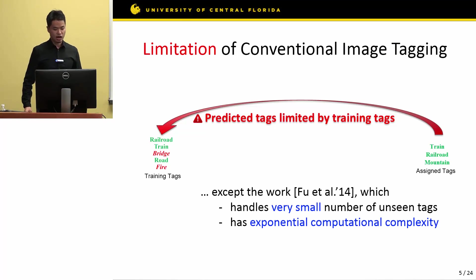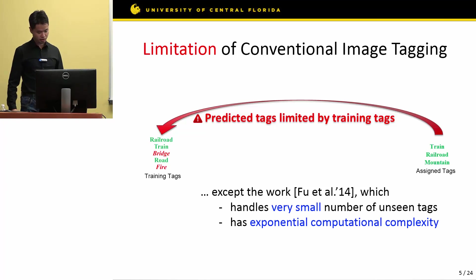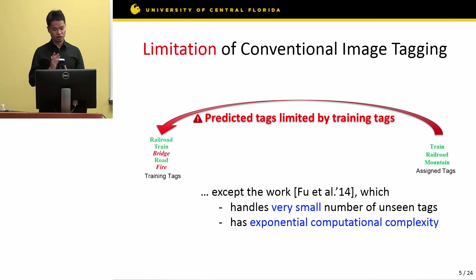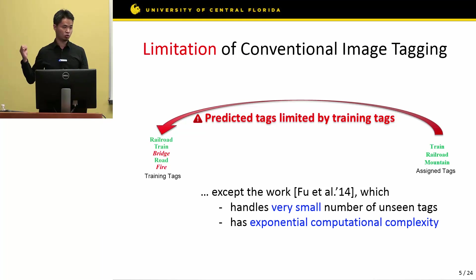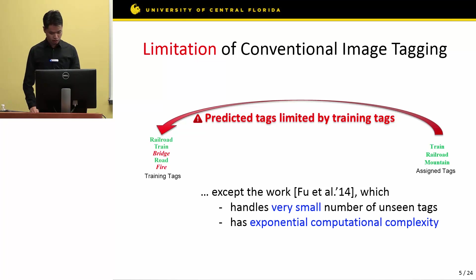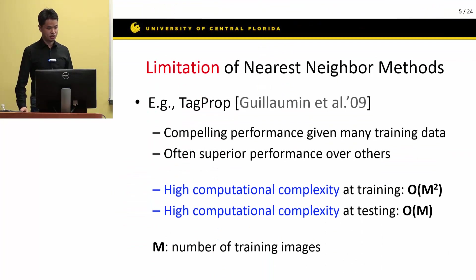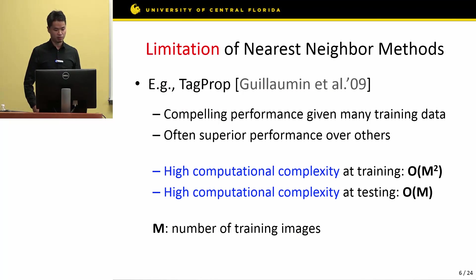This problem has been addressed by Foo et al. in 2014, but their method has a limitation of exponential computational complexity, so they could only perform experiments on a very small number of tags — specifically 10 tags in their experiment. In our experiment, we are able to assign 4,000 unseen tags at the same time.